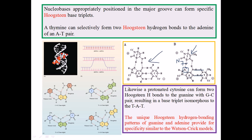The same bonding pattern applies to G and C. An important consideration is that in a simple duplex structure, as seen in this picture, we have a major groove and a minor groove in the helical arrangement. When we add a third strand, that third strand will interact with the major groove of the DNA, forming hydrogen bonds from the major groove side to create a compact triplex structure.